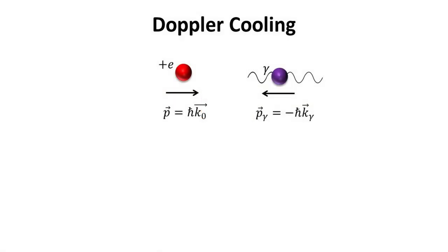If the ion has initial momentum p equals h bar k zero, the incoming photon from the right laser that is moving in the opposite direction has momentum equal to negative h bar k gamma. After absorbing the photon, the ion will have lost some of its momentum.